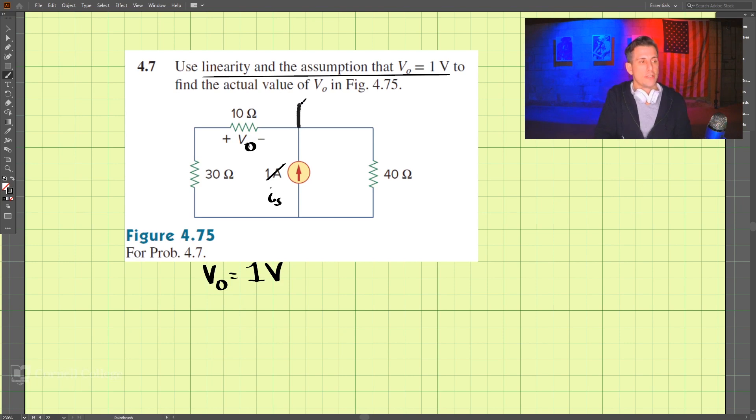I'm going to call this point up here our reference, so this is 0 volts up top here. And if this is 0 volts, then we know this point is 1 volt because V0 is 1 volt. The current I0 is equal to the voltage divided by the resistance. So I0 equals 1 volt divided by 10 ohms, which is 1 tenth amp here.